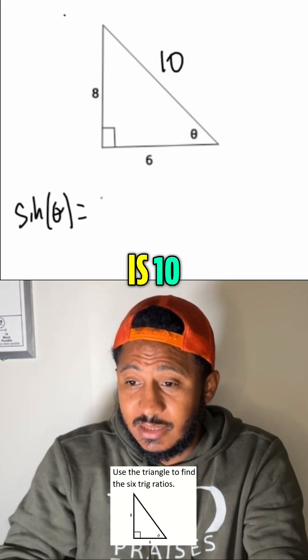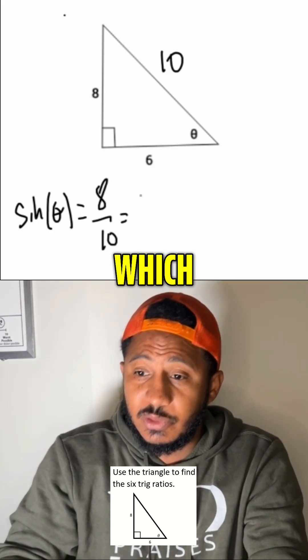So, opposite 8, hypotenuse is 10. So, 8 over 10, or which reduces to 4 over 5.